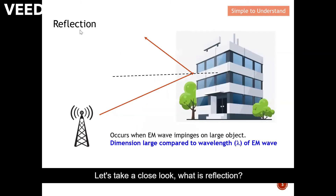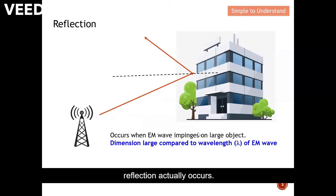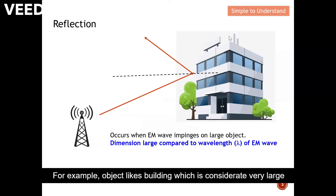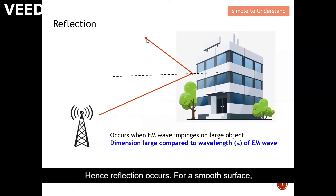Let's take a close look at what is reflection. As mentioned earlier, when an electromagnetic wave hits an object which is very large as compared to its wavelength, reflection actually occurs. For example, an object like a building, which is considered very large compared to the wavelength of an electromagnetic wave — hence reflection occurs.